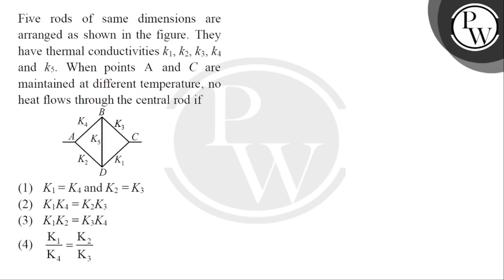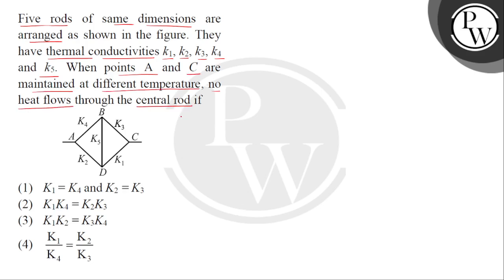Hello bachho, let's read the question. Five rods of same dimensions are arranged as shown in the figure. They have thermal conductivities K1, K2, K3, K4 and K5. When points A and C are maintained at different temperatures, no heat flows through the central rod if.